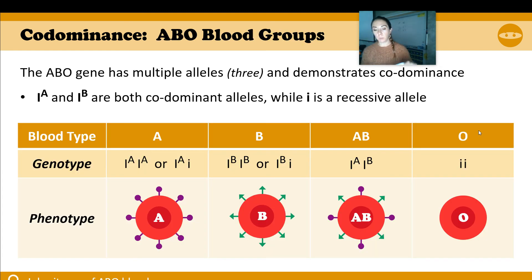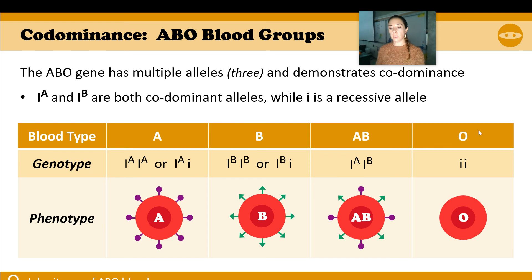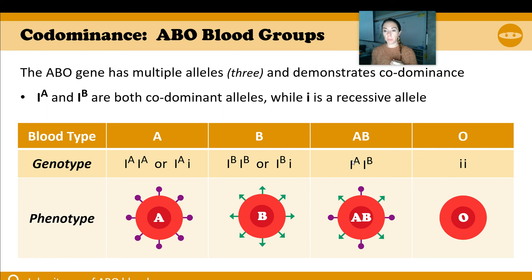Our biggest example of codominance is blood type. Blood type is looking at different proteins that are created — you have an A protein, B protein, positive, negative — whether it's present or not. The four different blood types you need to know: A, B, AB, and O. A and B are codominant, and they are both dominant over O, which is the lack of a protein. So if I have A and B alleles, I have AB blood. If I have A with a lowercase O, I have type A. If I have B with a lowercase, I have type B. If I have neither, I have type O blood.